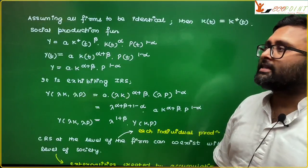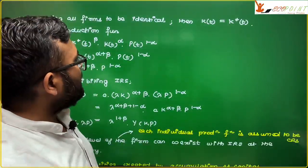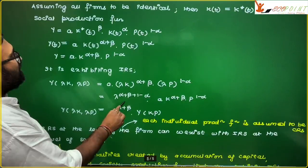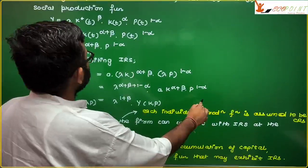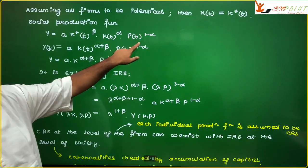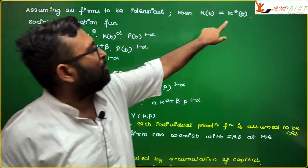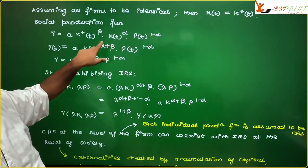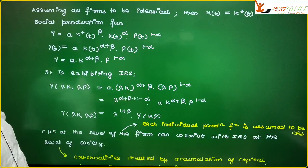If all of them are completely identical, all have the same level of capital invested. So society's production function, assume this. It is written as aggregate Y is equal to a k star t to the power beta into k_t to the power alpha, p_t to the power 1 minus alpha. If I take k_t as common, because I can take k star as k_t. So I can just write this. This expression is coming from the earlier slide. So we take k star as k_t. And then you write, it has to the power alpha plus beta.